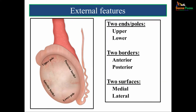The external features of the testes — it is an ellipsoid or oval shaped structure. Just remember the number 2: it has two ends or poles, two borders, and two surfaces. The two poles are the upper and lower end. The two borders are the anterior and posterior border. The two surfaces are the medial surface and the lateral surface.